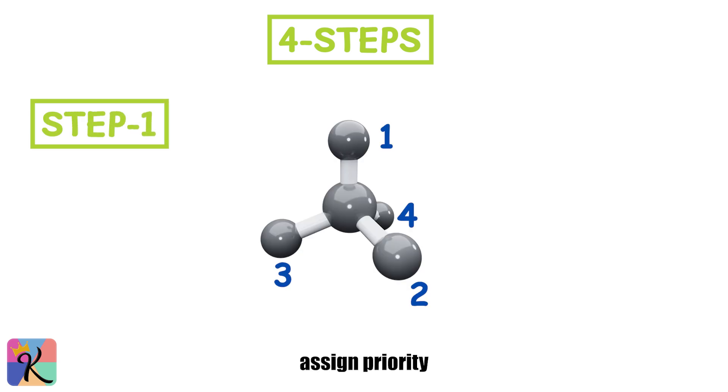Step 1. Assign priority to the four substituents attached to the chiral center using the Cahn-Ingold-Prelog priority rules. Step 2. Orient the molecule so that the lowest priority group is pointing away from you.